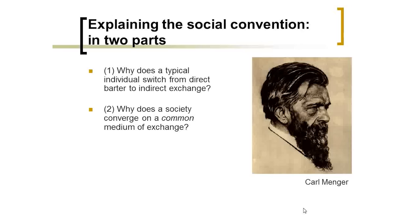Carl Menger, in his Principles of Economics, offers really the first satisfactory explanation of how money emerges through a bottom-up process. Adam Smith had the idea — he talks about gold and silver serving as money through 'the common consent of mankind' — but he didn't really explain how we got from barter to monetary exchange. Menger did. I break it down into two steps.